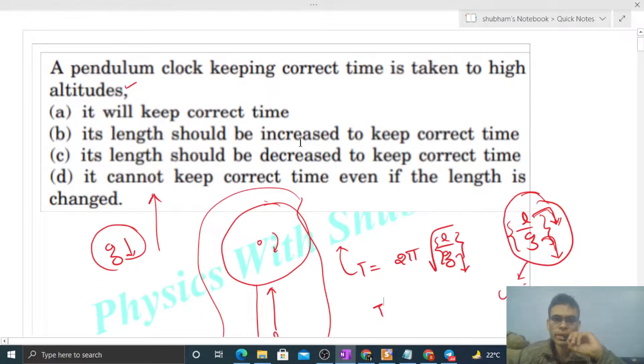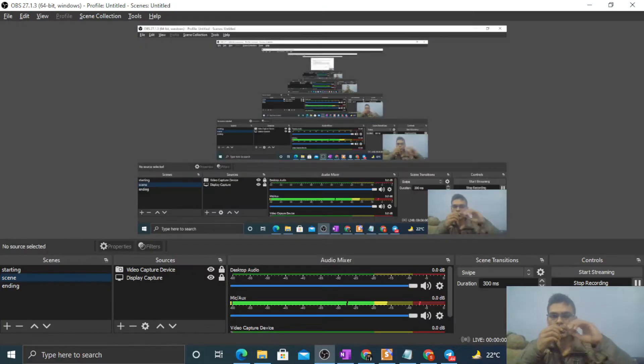So you see, option C is correct: its length should be decreased to keep correct time. I think you have understood. Let me know if you still have any confusion.